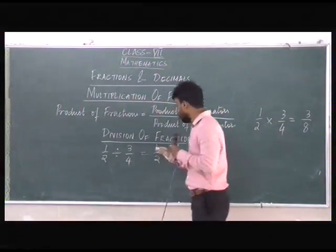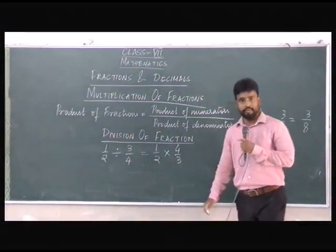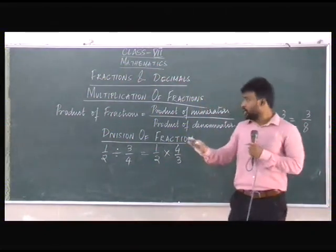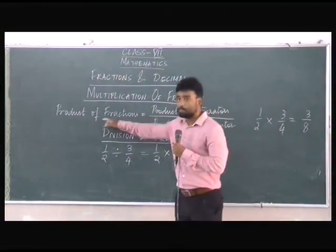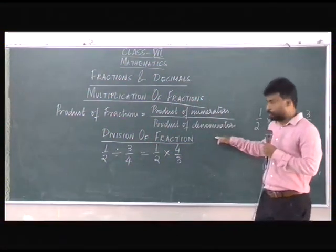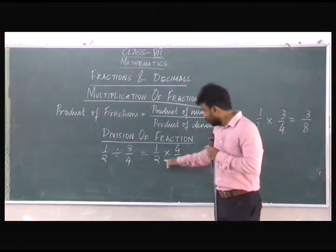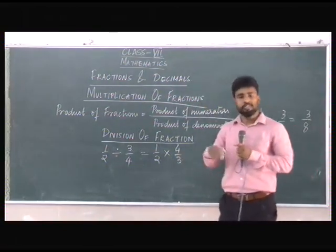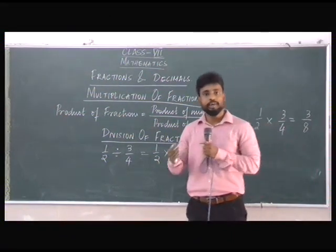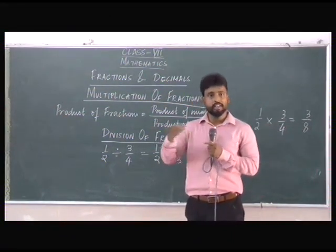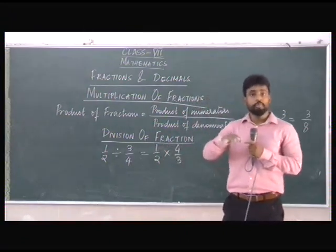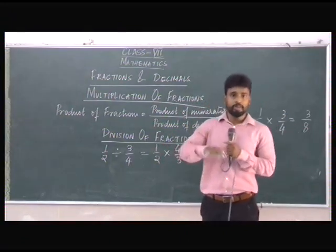So here we have 1 by 2 into 4 by 3. Now always remember, when we want to find out the product of fractions, it is equal to product of numerators by product of denominators. Here we can see that 2 and 4 can be cancelled. Always remember that when you want to cancel numbers, it is always numerator with denominator or denominator with numerator. But when you want to find out the product, it is always numerator with numerator and denominator with denominator.